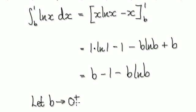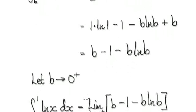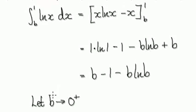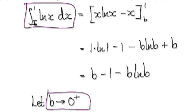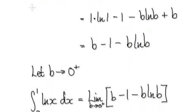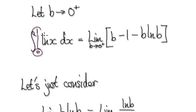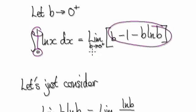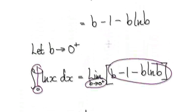Now allow b to head towards 0 from the right-hand side. Rather than integrating from b to 1, the minute you allow b to head towards 0, you can actually say you're integrating from 0 to 1. But then you've got to take the limit of this expression as b tends to 0 from the right-hand side. Let's go back one step.